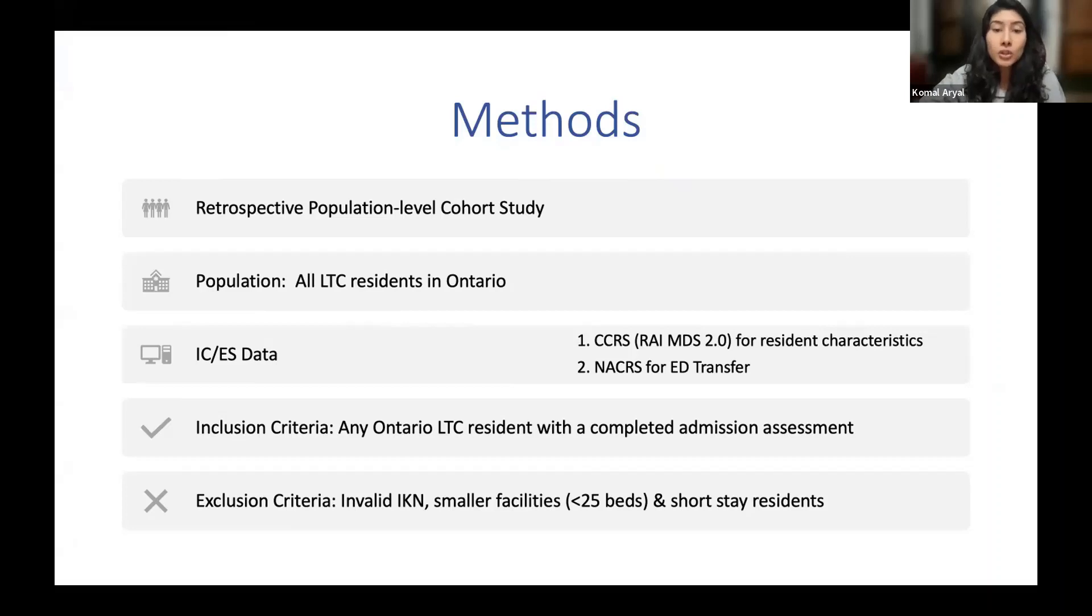We included all nursing home residents that reside in Ontario with a complete admission assessment, excluded those that had an invalid identification number just so we couldn't trace them, and those residing in small facilities or facilities with less than 25 beds just because the objectives of care are very different at those facilities.